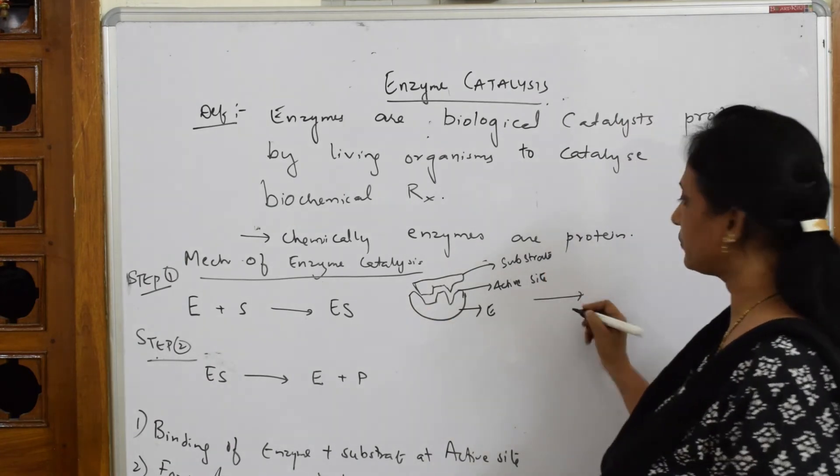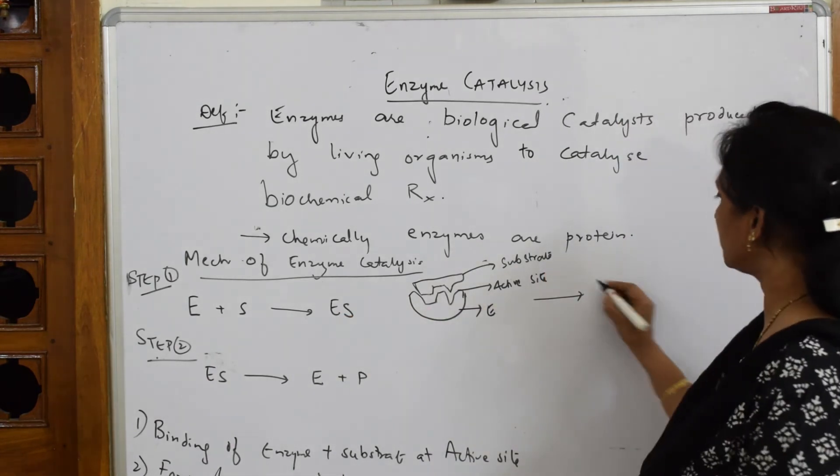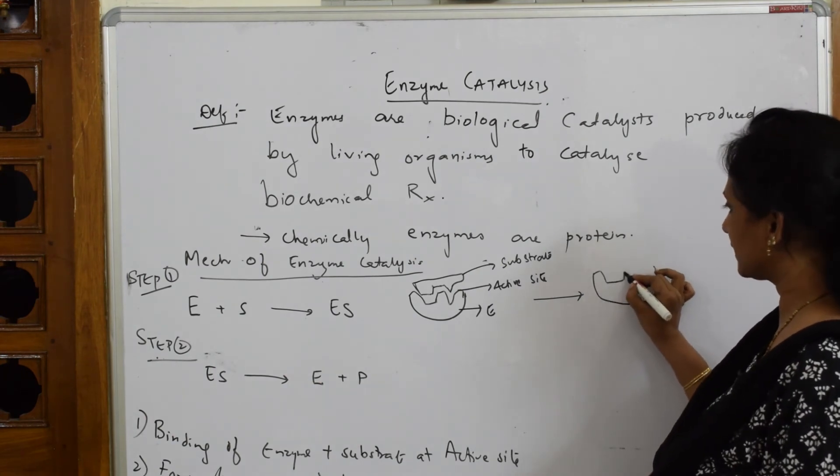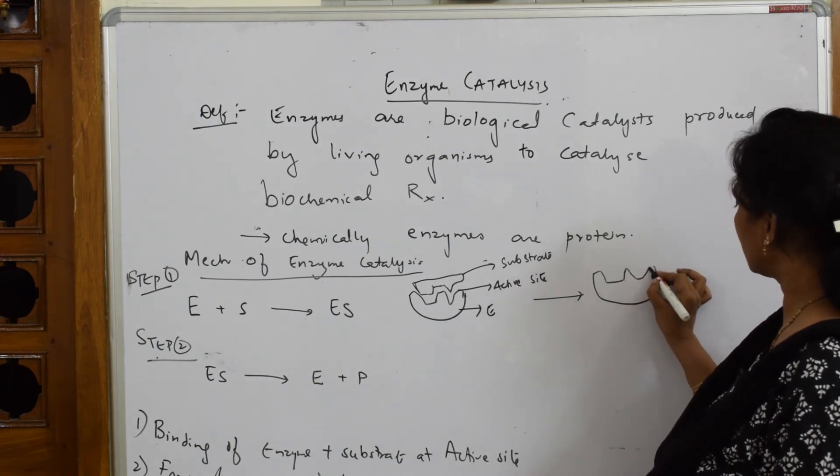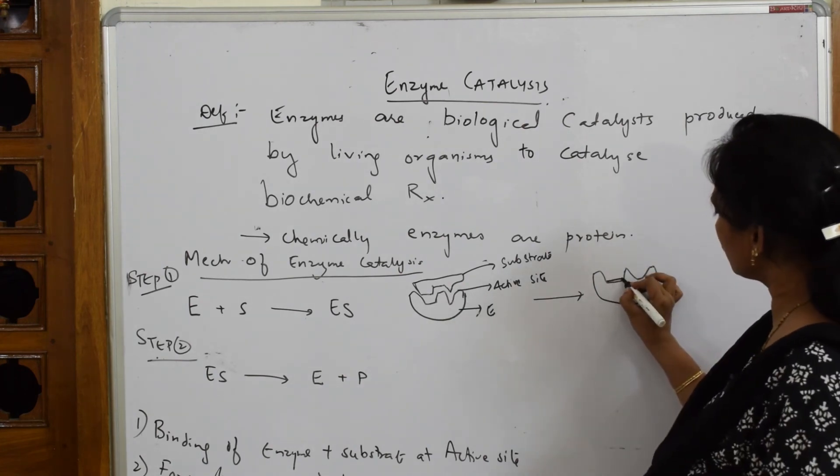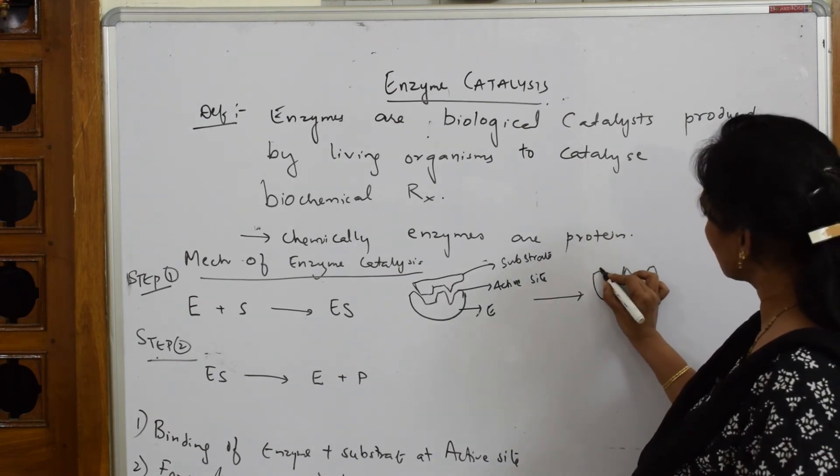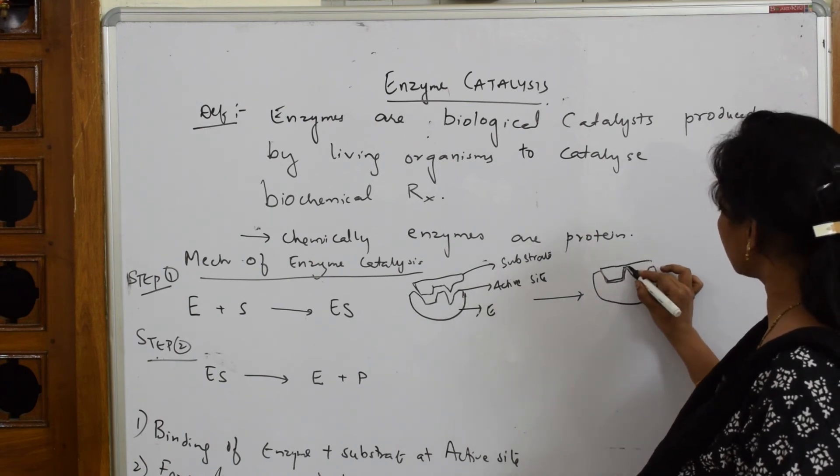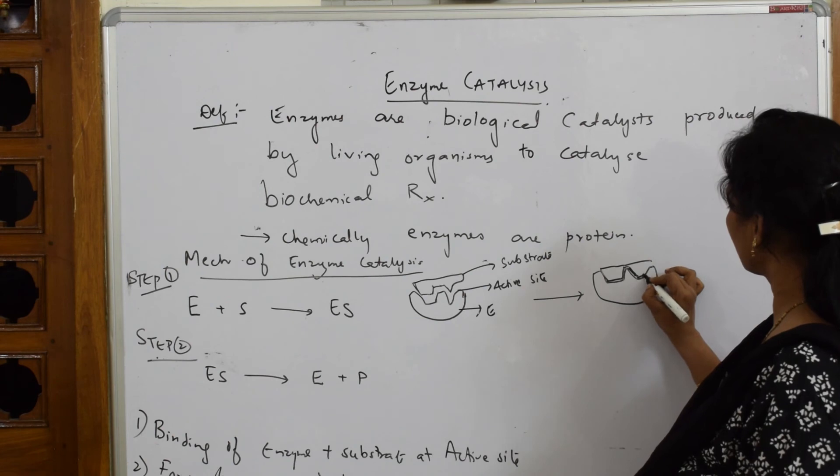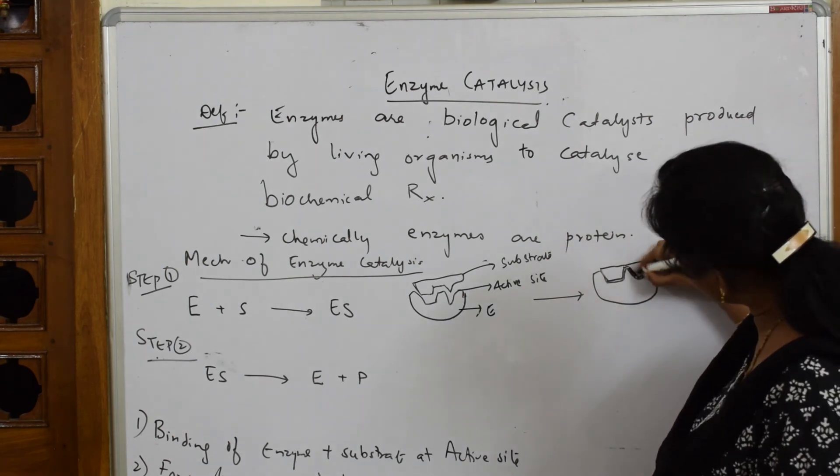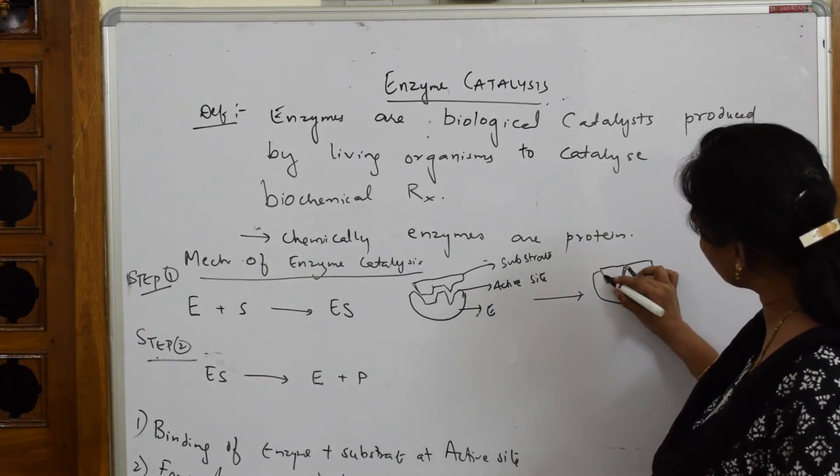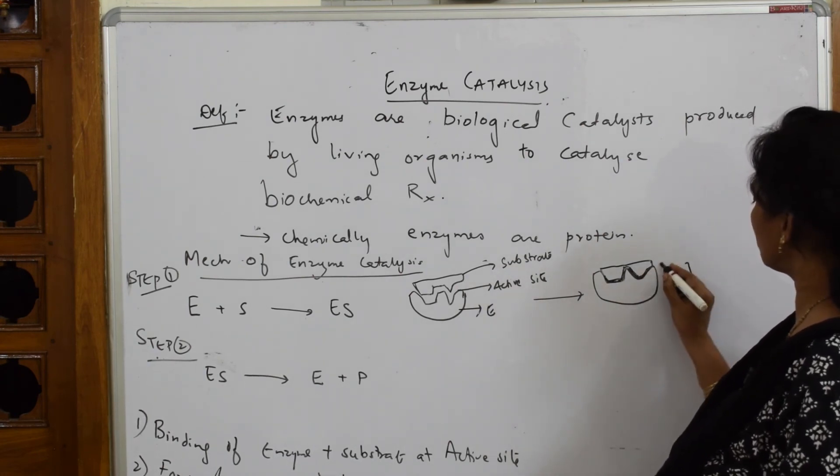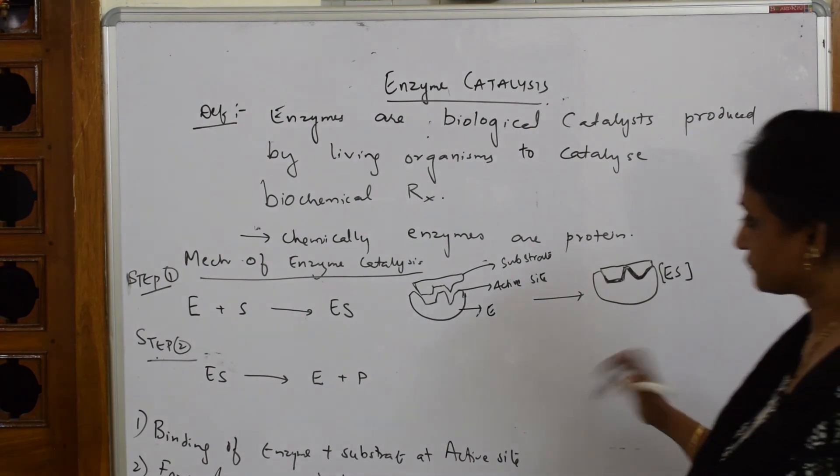So once they combine what do they form? They're going to form enzyme substrate complex. How does this look? Now I'm just drawing it like this. Now fix this substrate in this. So it's going to go and fix perfectly like this and the whole active site is occupied. So the site also is occupied. Now bind it. Now this is called enzyme substrate complex.